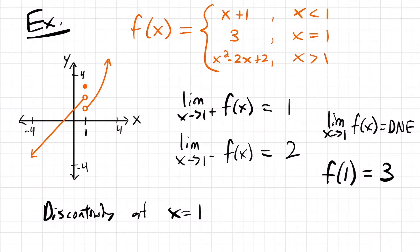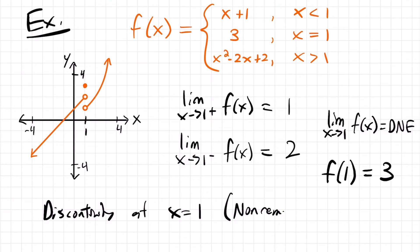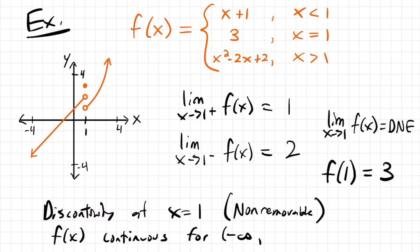So we have a discontinuity at x equals 1. But is it removable or non-removable? Remember, it's removable if we're able to redefine our function to remove that discontinuity and have a continuous function. In this case, we have a piecewise function, and it's not going to be possible to redefine this to make it continuous. So we would say that this is non-removable. Our function is going to be continuous from negative infinity to 1, unioned with 1 to infinity. It does not include 1, and that's the most important thing to note here.